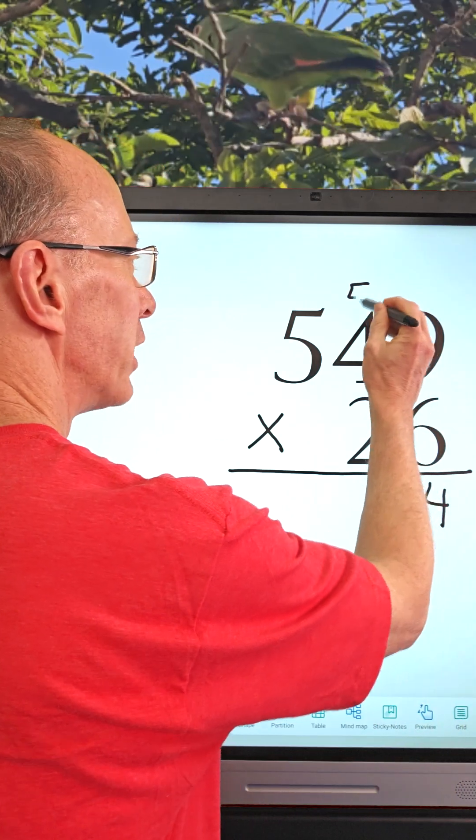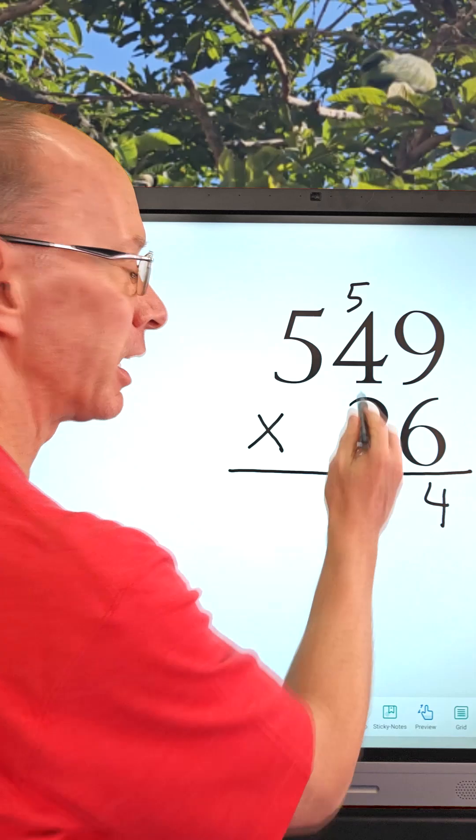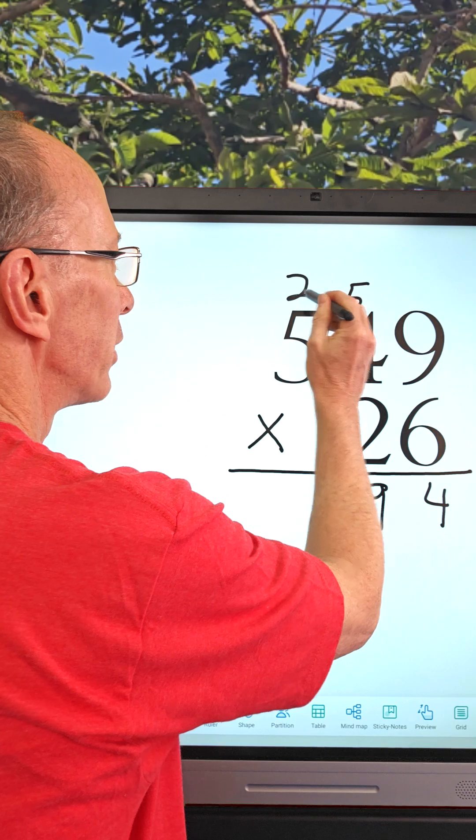So I put the 4 right here, put the 5 up there. We're going to add that 5 in a little bit, not yet. Then we're going to take 6 times 4, which is 24, plus the 5 is 29. So I put the 9 right up here, we're going to put that 2 up here. We're going to add that 2 in a little bit, not yet.